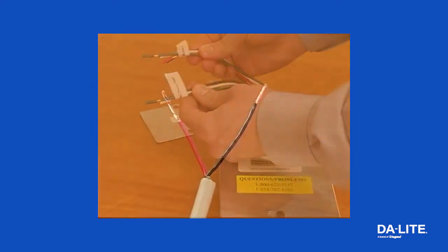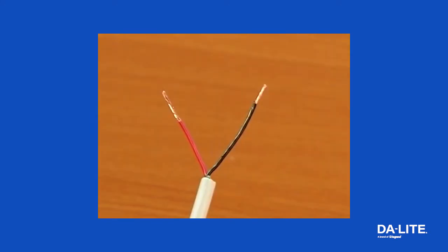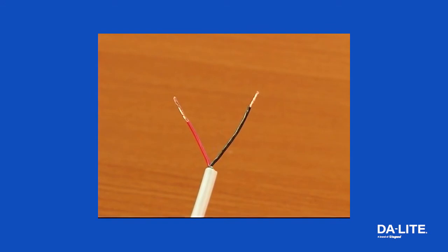Use two conductor 20 to 24 gauge wire to extend the low voltage connection from the projector's 5 or 12 volt screen trigger output to the length required to reach the VPI.